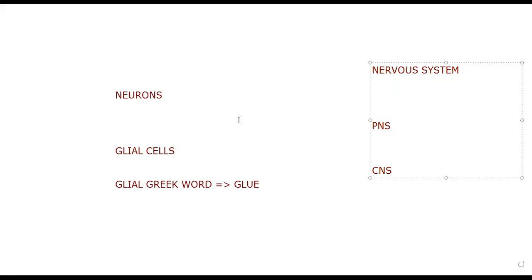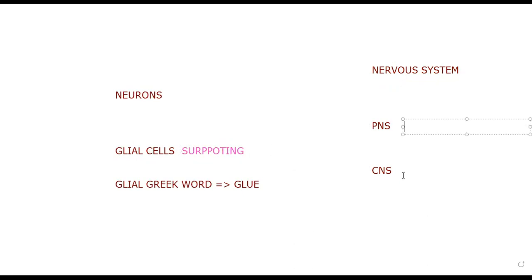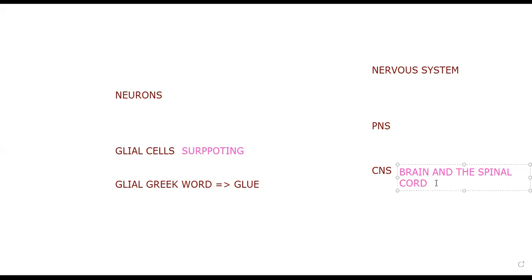In the peripheral nervous system we have specific supporting cells — sometimes called supporting cells or glial cells — because they stick the neurons together. The CNS involves the brain and spinal cord; the PNS is all parts of the body except the brain and spinal cord.